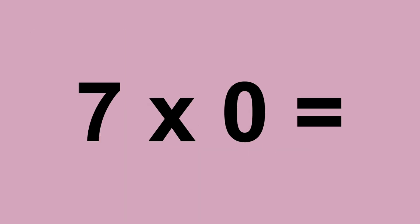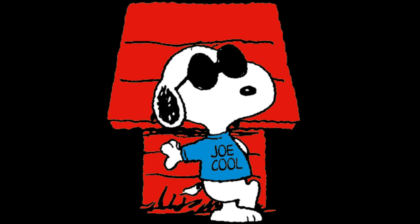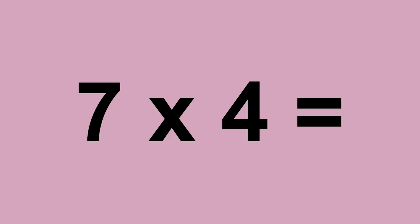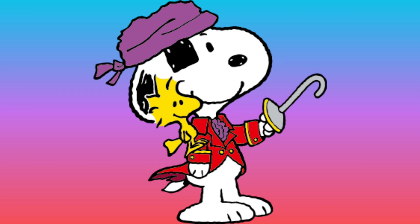7 times 0 equals 0. 7 times 1 equals 7. 7 times 2 equals 14. 7 times 3 equals 21. 7 times 4 equals 28. 7 times 5 equals 35. 7 times 6 equals 42.